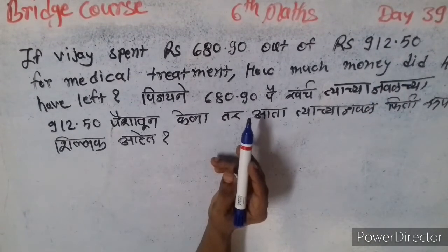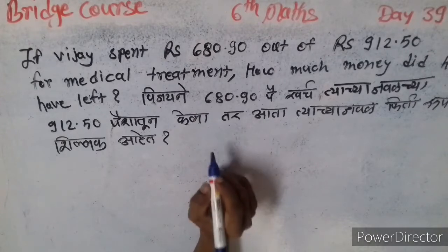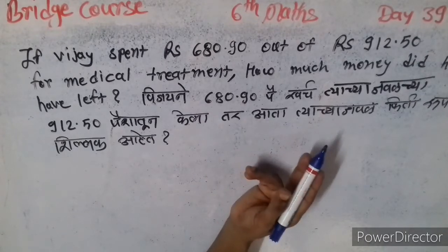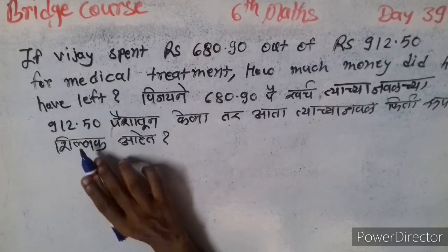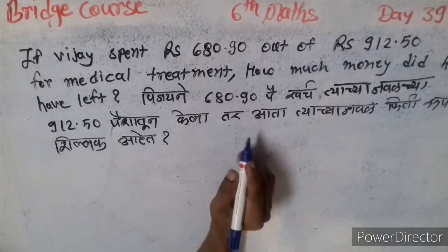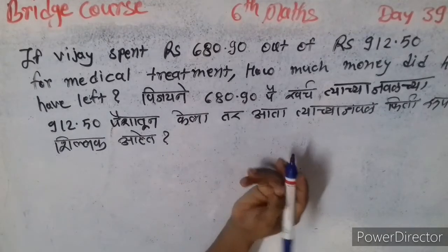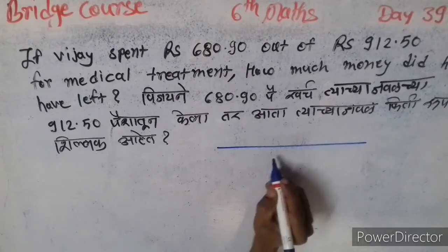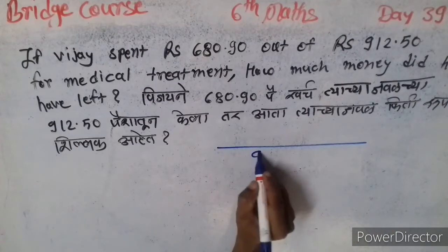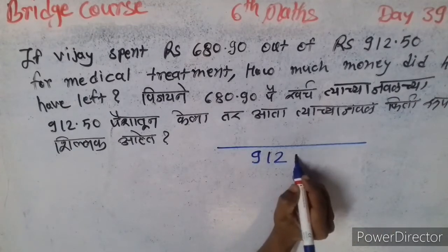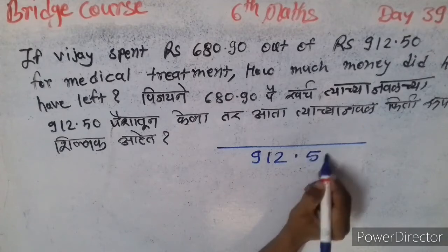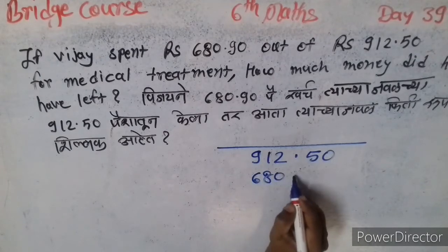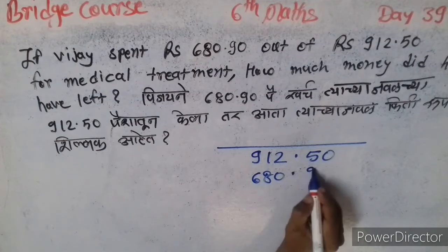Second example: How much money did he have left? He had 680.90 rupees. He spent 912.50 rupees for medicine treatment. How much money did he have left? It is subtraction: 912.50 minus 680.90.